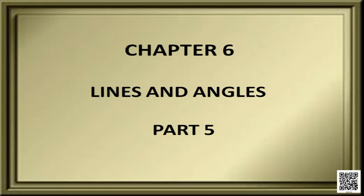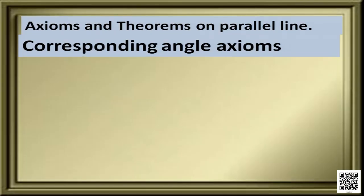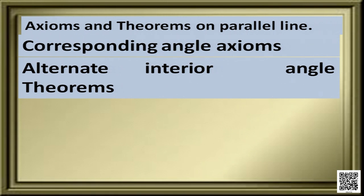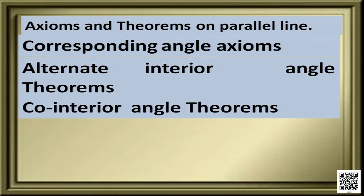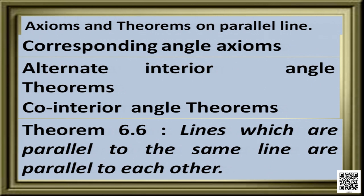Welcome dear students to this session. Today we are going to discuss from class 9 mathematics book chapter 6, lines and angles. This is part 5. Earlier we have discussed about parallel lines — axioms and theorems including corresponding angle axioms, alternate interior angle theorems, co-interior angle theorems, and the theorem that lines parallel to the same line are parallel to each other.